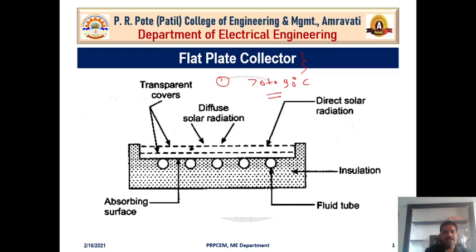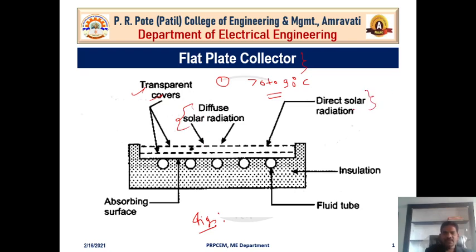Observing the diagram of the flat plate collector, this flat plate collector is situated on a terrace in an inclined position. The components include the transparent cover at the top. The radiation incident on the collector includes diffuse solar radiation and direct solar radiation, both of which are absorbed by the transparent cover of the flat plate collector.